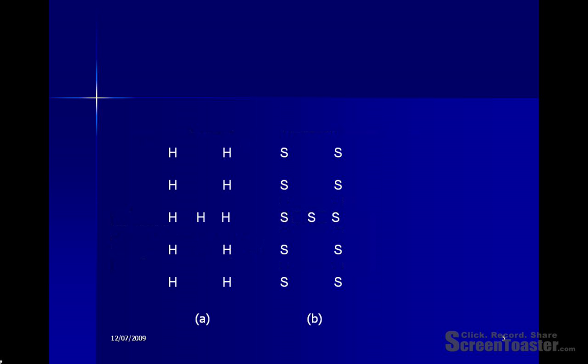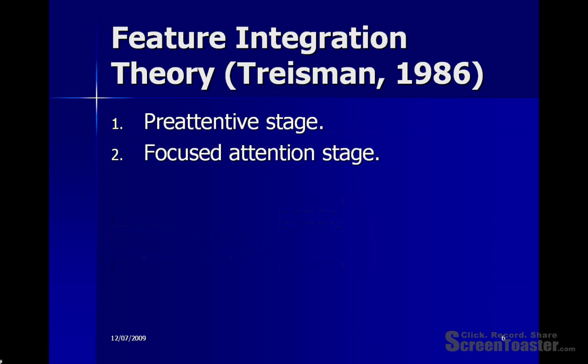In another part of his study, Navon presented people with global features which were rather less distinct, as shown on the screen. Here Navon found a different kind of finding: people were quicker to identify the local features than they were to identify the global features. Moreover, when people were asked to identify the global features, they were slower to respond if the global features conflicted with the local features — they would be slower to respond to the stimulus on the right-hand side of the screen.